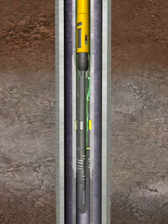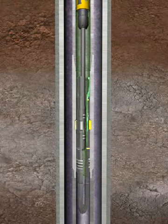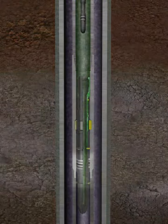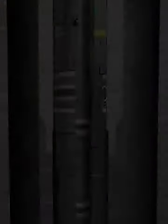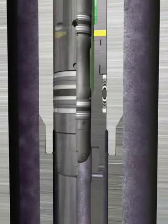jarring down allows the pulling tool to latch the plug's removable mandrel fishing neck. And then the removable mandrel is pulled back to surface, allowing the well to equalize.